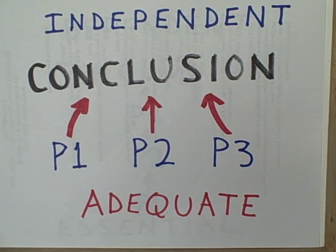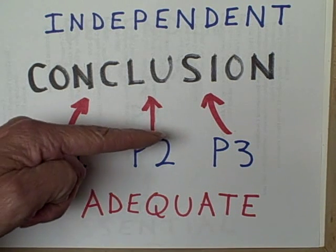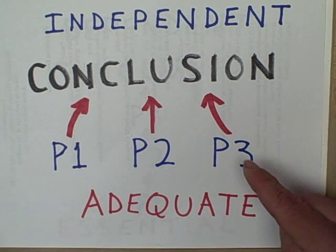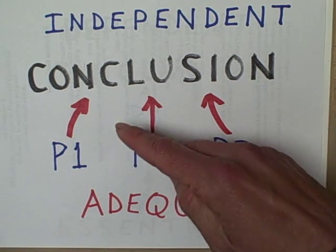Sometimes we have more than one premise to support our conclusion. We have an independent array of premises when we have several premises, and each of these premises by itself would be adequate to support the conclusion.